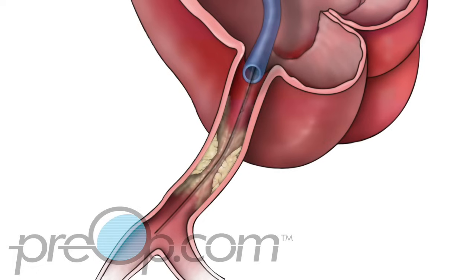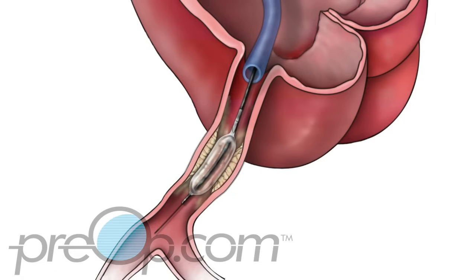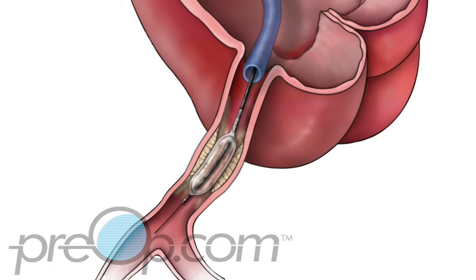A deflated balloon catheter is positioned in the blockage. The balloon is inflated, pushing against the plaque and opening the artery for more blood to flow. The balloon is then emptied and the catheter removed.